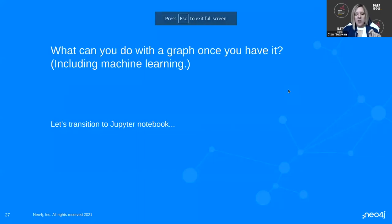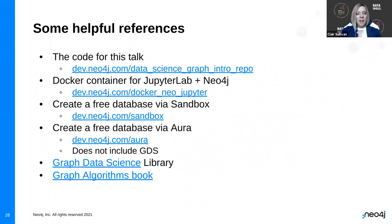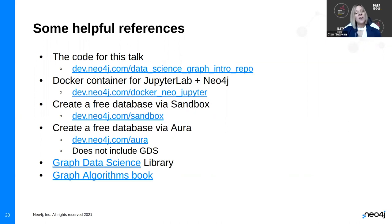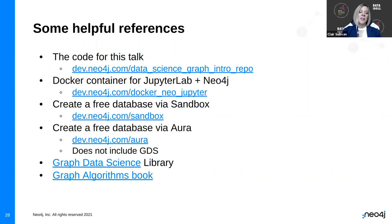Here is probably the most important slide for this entire talk. First, the repo — the 'data science graph intro' repo — that'll take you to my GitHub. It has the Jupyter notebooks in there. If you want to run this in Docker, there's a link to my Docker setup I use all the time for running Neo4j on my local machine alongside Jupyter Lab. I showed you how to create a free database with the sandbox — that link is there. There's also another thing Neo4j released called Aura, which is a cloud-hosted solution where you bring your own data. One thing I will tell you is that it does not include the Graph Data Science Library.